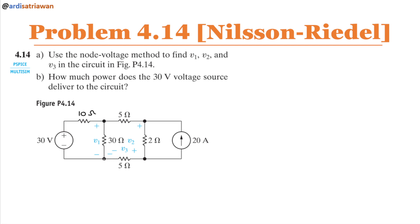I'll pick this node here as our ground, so this voltage is equal to zero. We know that this node here is 30 volts from the ground, so we will have 30 here. Let's name this node as node A and this node here as node B.